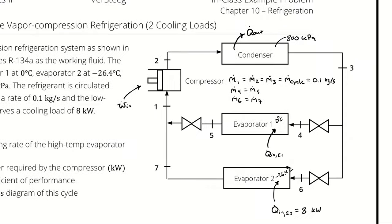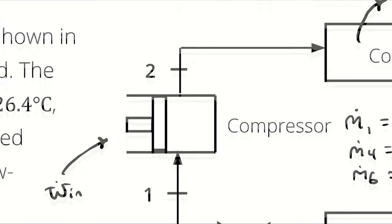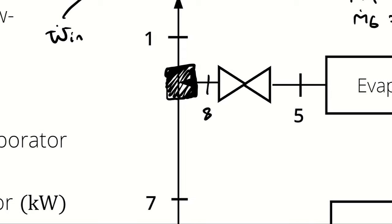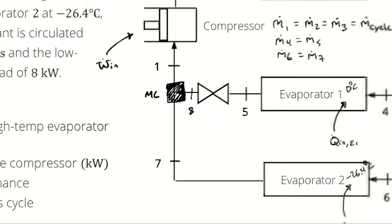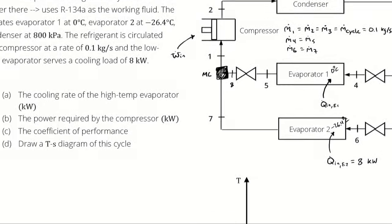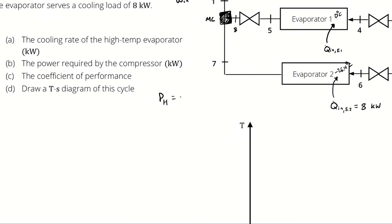Before we get into the cycle analysis, I am going to add an additional state point — a mixing chamber — and establish state point 8 between the expansion valve and that mixing chamber. My high pressure is 800 kilopascals. My medium pressure is the saturation pressure corresponding to 0 degrees Celsius. My low pressure is the saturation pressure corresponding to negative 26.4 degrees Celsius.